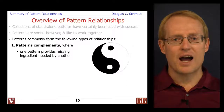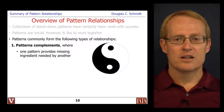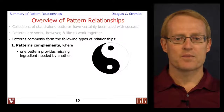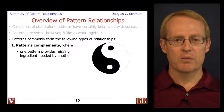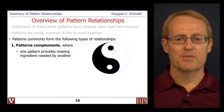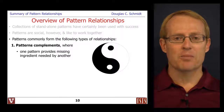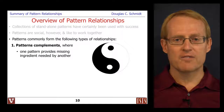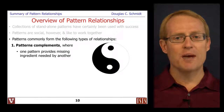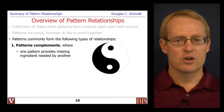It turns out that patterns commonly have several different types of relationships. One of the most basic types is called a pattern complement, and there are several different variations. In one variation, one pattern provides a missing ingredient needed by another pattern. For example, the factory method pattern can be used to create objects in a design, and we often need a complementary pattern called a disposal method to free up the resources created by the factory method.